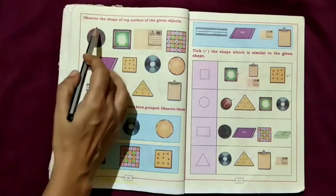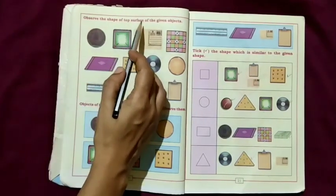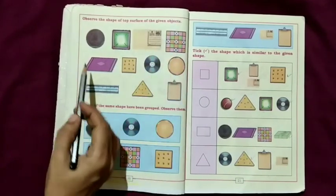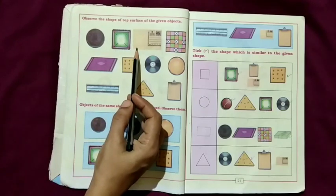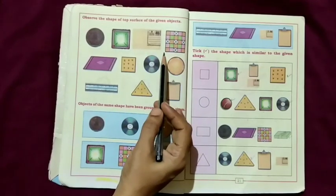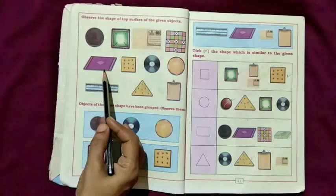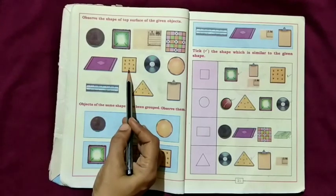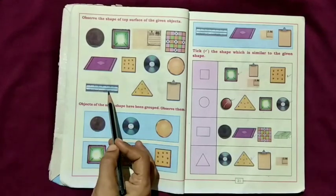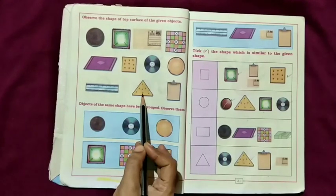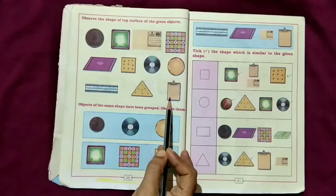Observe the shape of top surface of the given objects. This is a one rupee coin, this is postcard, this is Ludo, this is mat, this is square shape biscuit, this is one disc, this is ruler, this is triangle shape biscuit, this is writing pad.